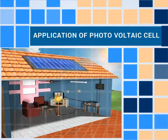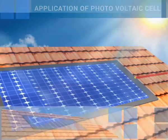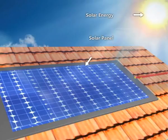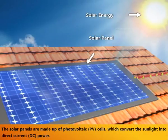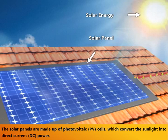Application of photovoltaic cell. An application of photovoltaic cell in a solar powered home is shown in this video. The solar panels are made up of photovoltaic, i.e. PV cells, which convert the sunlight into direct current, i.e. DC power.